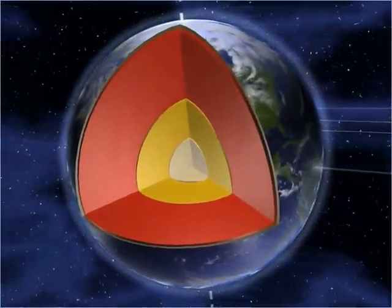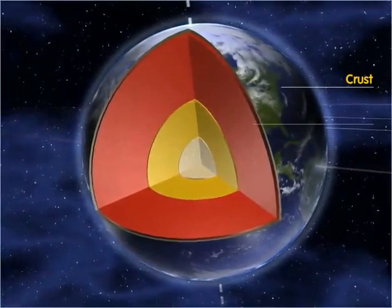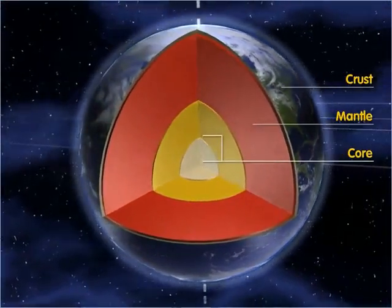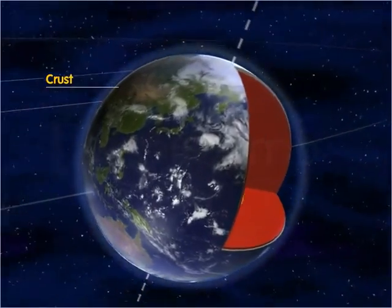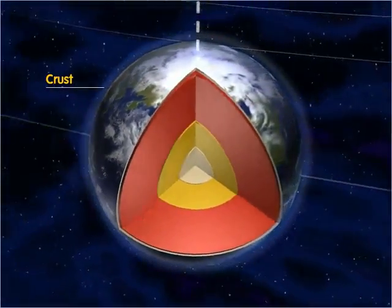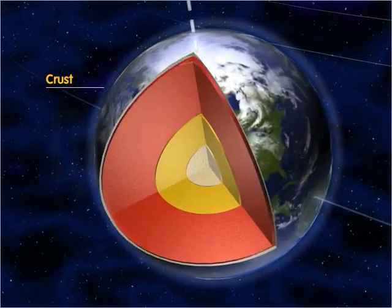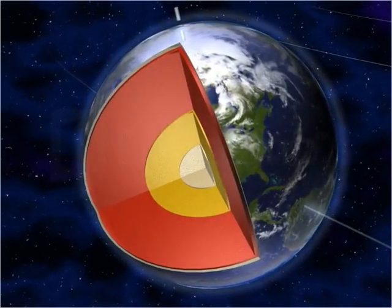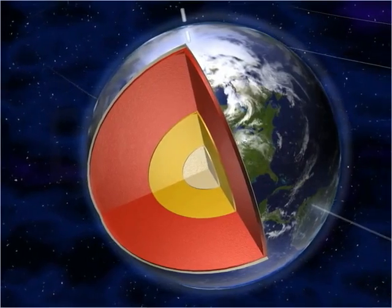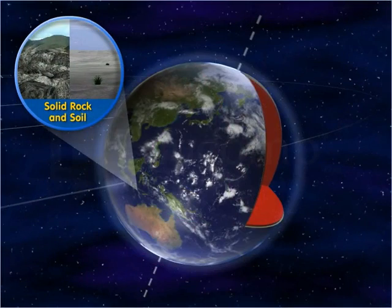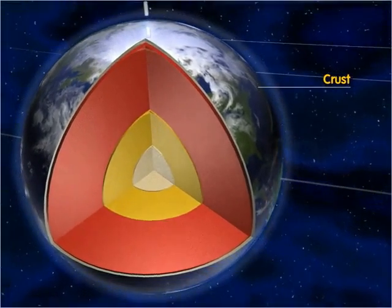The three main layers are crust, mantle, and core. The crust is the outermost layer of the Earth. It is very thin in comparison to the mantle and core. It consists mainly of solid rock and includes soil as well.